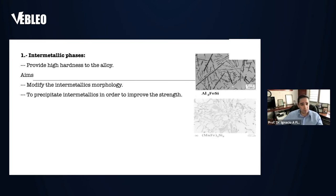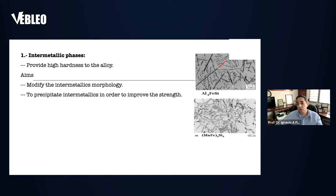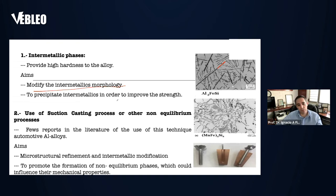The idea of forming intermetallic phases into a microstructure in aluminum is that they provide high strength of the alloy. However, they are quite sharp and are also stress concentrations — they are not good for the mechanical properties. So the idea is to modify the intermetallic morphology in order to enhance the mechanical strength, using a different process not reported before: suction casting. The main idea is to refine the microstructure and modify the intermetallic from a needle-shaped to a rounded or spherical shape, and to promote the formation of non-equilibrium phases which could also influence the mechanical properties.